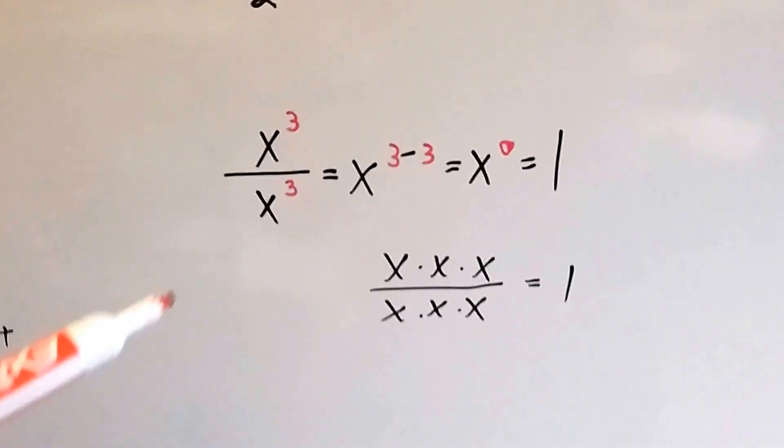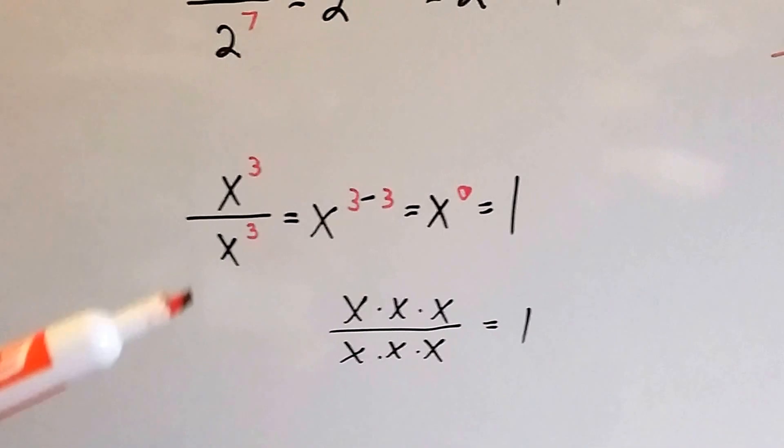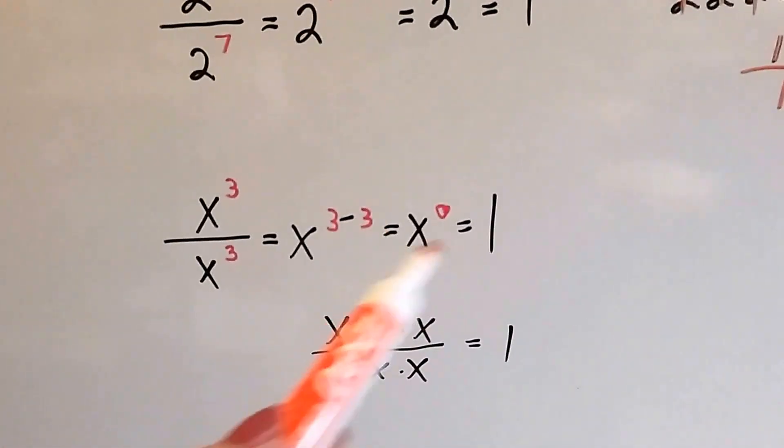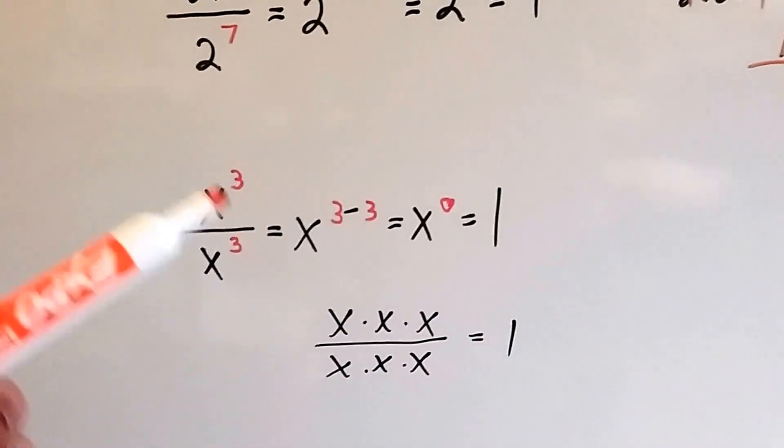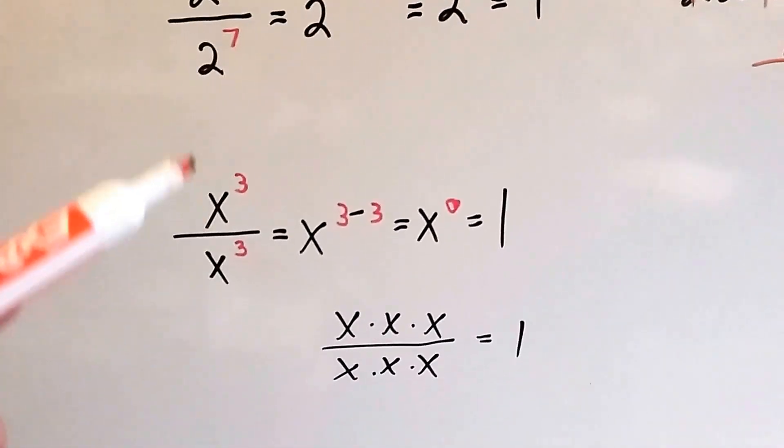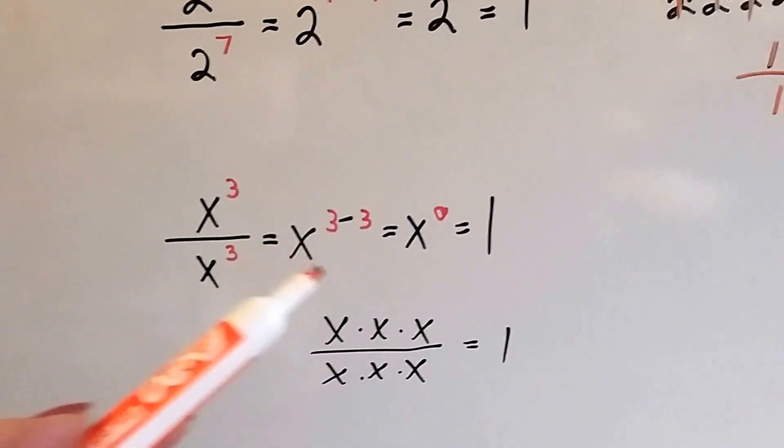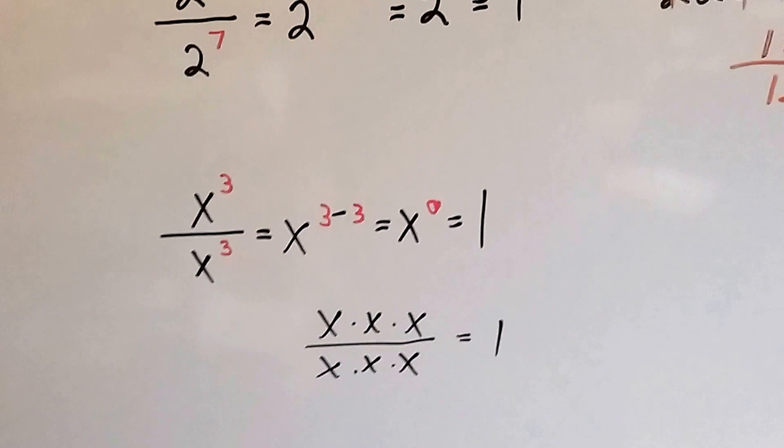And even if it's a variable, if we have x to the 3rd power over x to the 3rd power, it's going to be the same thing. The 3 take away 3 is going to be 0, x is going to equal 1. And it doesn't matter what x stands for. x could be taking the place of 99, it could be taking the place of 13, it doesn't matter. If it's got a 0 there, it equals 1.